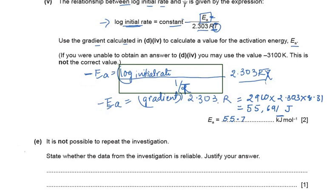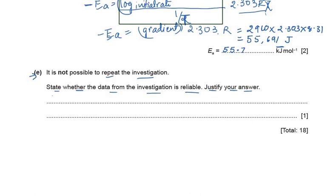The last sub-question states it is not possible to repeat the investigation, and asks whether the data is reliable. The answer is no — because there is an anomalous reading in the data. Since not all the data is consistent, we cannot fully rely on all of it.